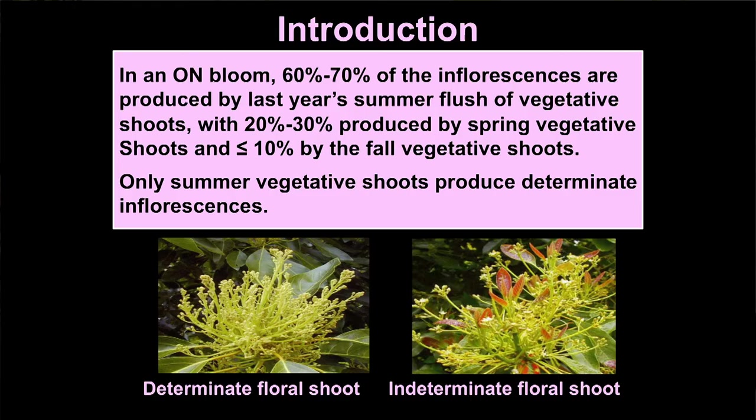In an on bloom, 60 to 70% of the inflorescences are produced by last year's summer vegetative shoot flush, 20 to 30% are produced by last year's spring vegetative shoots, and 10% or less are produced by last year's fall vegetative shoots. This makes it very clear: every year we want to get as many summer vegetative shoots on the tree as we can to have a good bloom the following year.